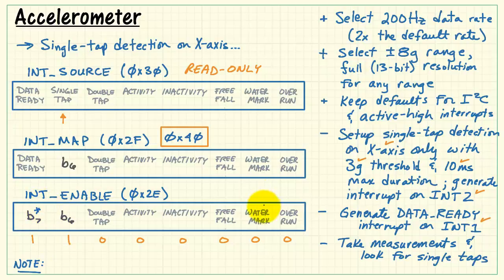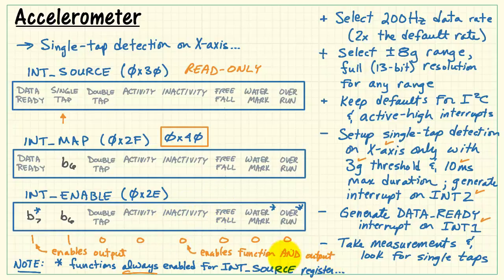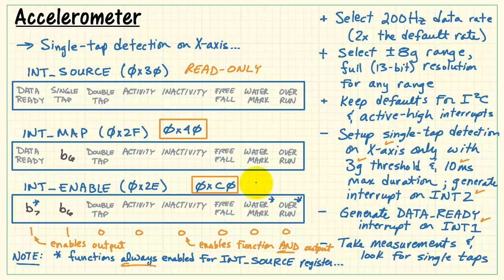Finally, we need to enable the interrupts out to the pin. This is the interrupt enable register at 2e. Again, every single one of these lines up with the other interrupt-related registers. I am now enabling the data ready and the single tap interrupts. All the others are set to 0. Now, there's an important distinction here. I'm going to star 3 of these bits. And that includes data ready, watermark, and overrun. Now, these interrupt functions are always enabled back in the interrupt source register. And that is a register that you could choose to read directly if you like. Setting a 1 for one of these starred bits means that you simply enable that interrupt to appear on the output. For one of the others, however, this means that you are enabling the function and you are enabling the output on the pin. Altogether, that bit pattern is C0 hex.